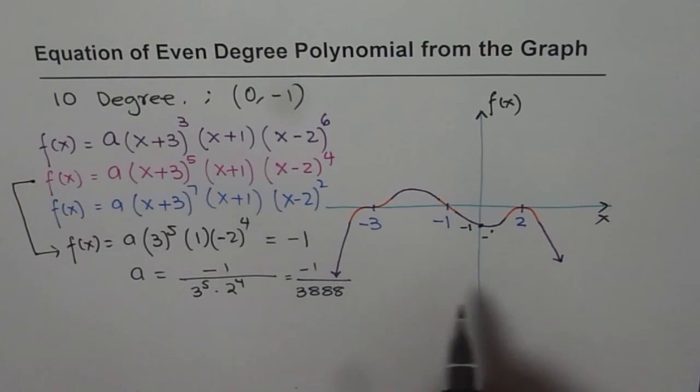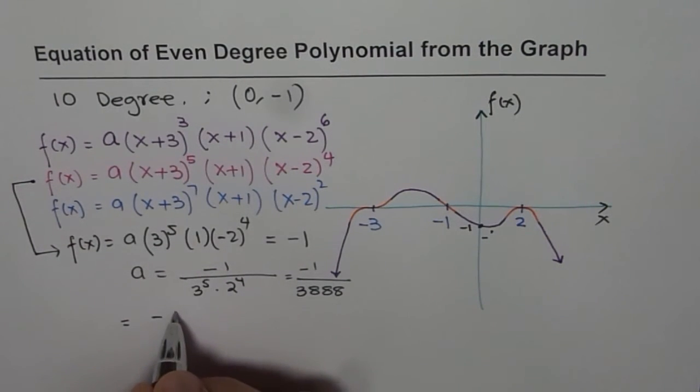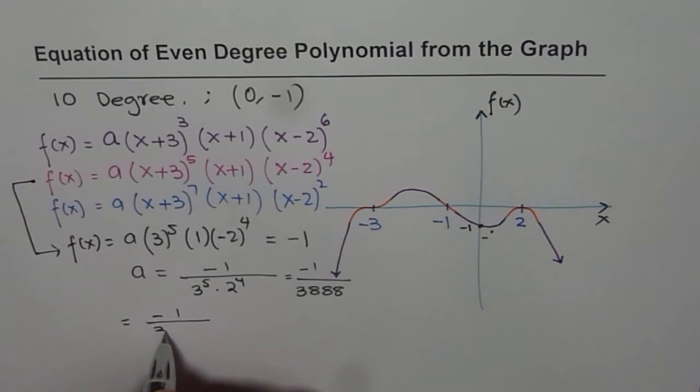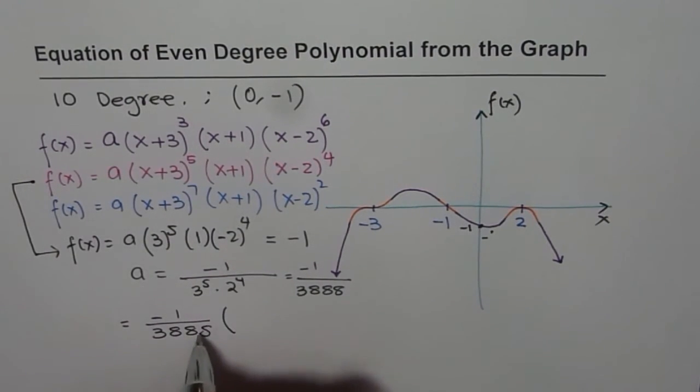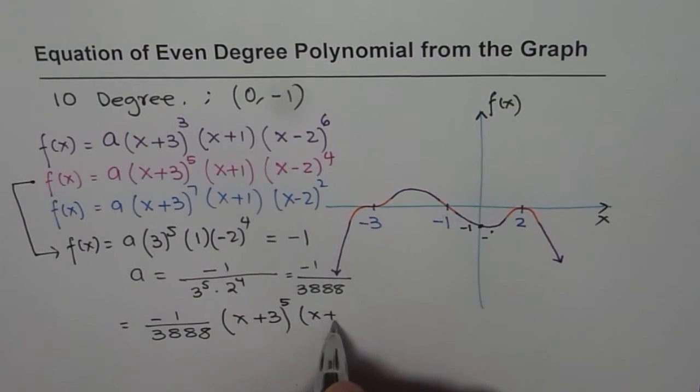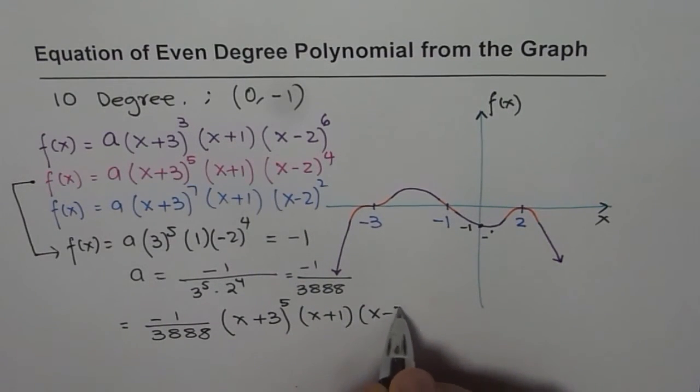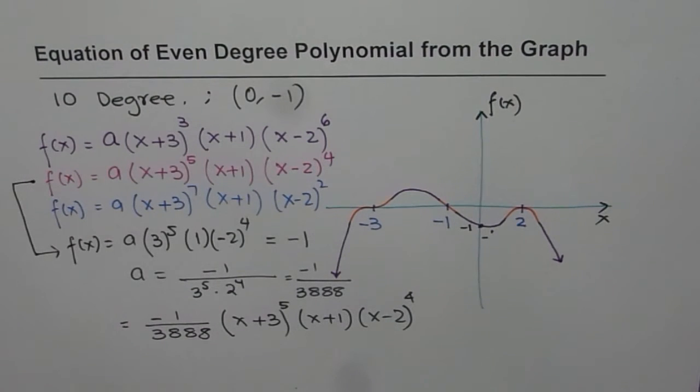And so a possible equation for the given graph is minus 1 over 3888. That is the value of a, and the x intercepts x plus 3. So we have chosen the one where this degree is 5, x plus 1 times x minus 2 to the power of 4. So that is how you can get equation of a polynomial given the graph.